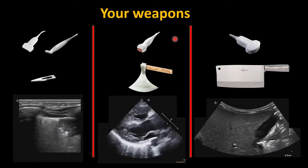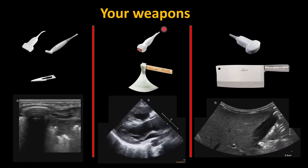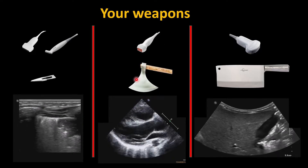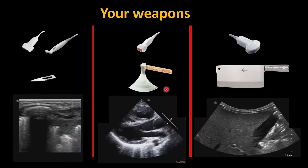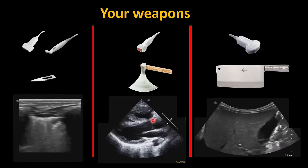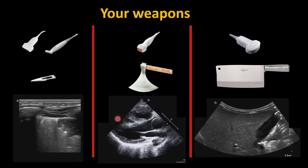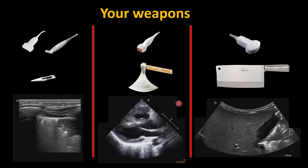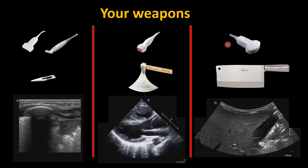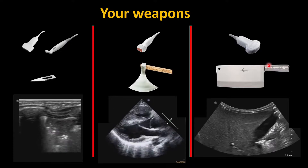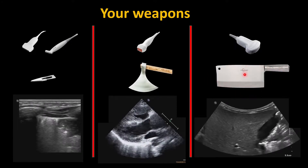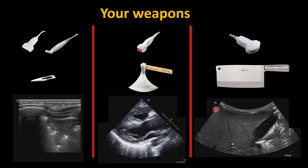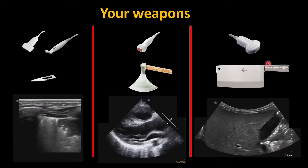The second probe is a phased array probe. Cardiologists like to use this. The image it produces is like an axe-knife shape. It can detect movement and structure very well, as we see it used in cardiac echo. The third probe is the curvilinear probe. It is rather a rough probe, like a chopping knife. It can go quite deep because of its lower frequency, but unfortunately the image it produces is usually not that detailed.